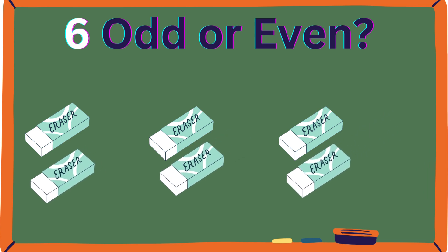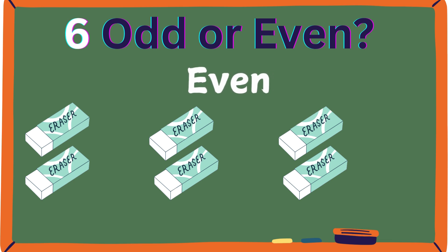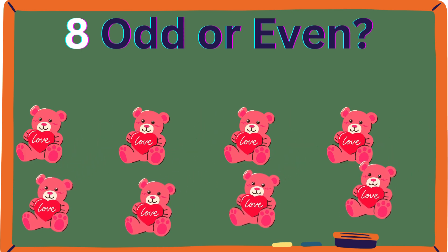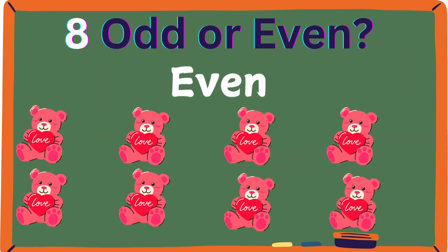Six — odd or even? Even. Six can make three pairs of two. Eight — odd or even? Even. Eight can make four pairs of two.